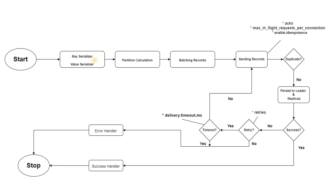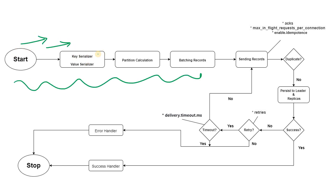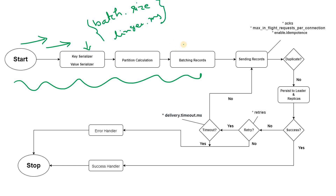To understand the optimized approach, you need a clear idea of Kafka producer internals, which I discussed in a previous video. Briefly: the producer serializes messages (value and key), computes the partition, and then batches the records. The producer never publishes a single message directly — it batches records. Two key properties control this: batch.size and linger.ms. Whichever condition is satisfied first completes the batch, and that batch (which may contain multiple records) is written to the Kafka cluster.